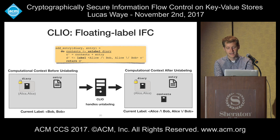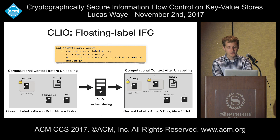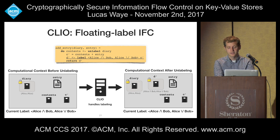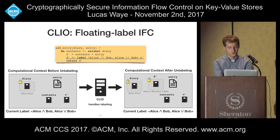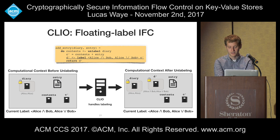Here we're writing a short function to add an entry using a labeled value, which is the entry. The current computation context has the current label Bob, Bob, which means this computational context has been influenced by some of Bob's secret data. Data can be placed inside an opaque container called a labeled value, and in order to access that data you have to perform the unlabel operation. Through this command, Clio will allow access to the data and store it in the contents variable, but will update the current label to reflect the security requirements. The result is now secret to both Alice and Bob.